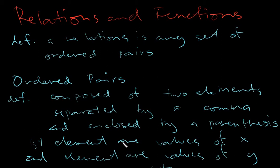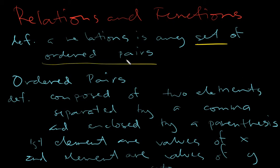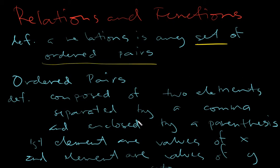By definition, relations are any set of ordered pairs. When we talk about sets, they are just simply a collection of elements or objects — specifically, a collection of ordered pairs. So let's go now to ordered pairs.